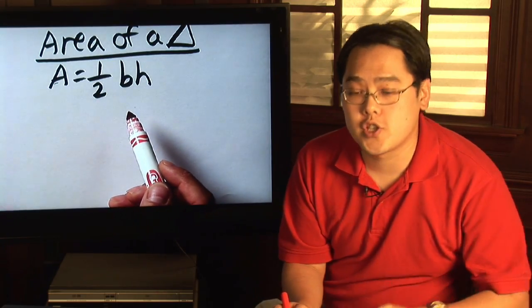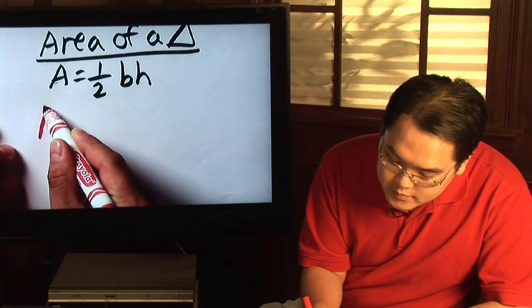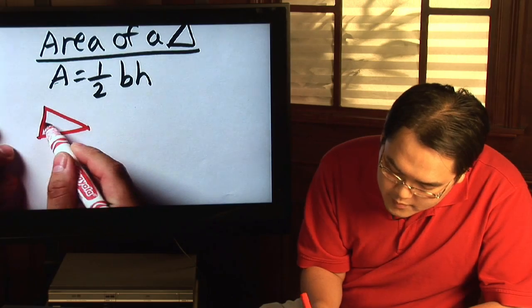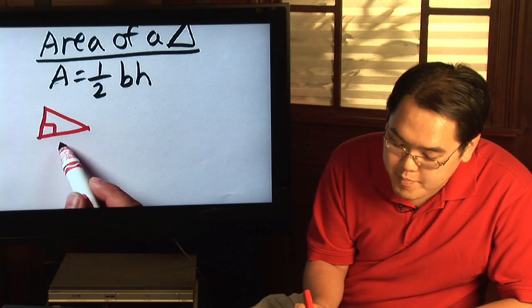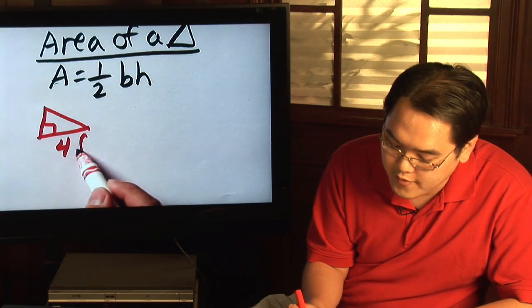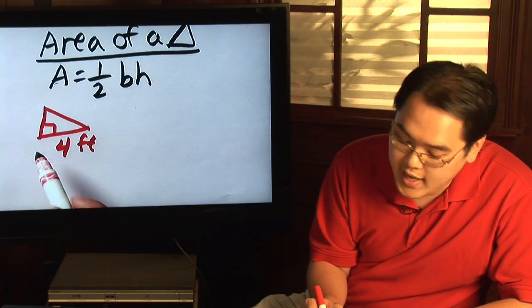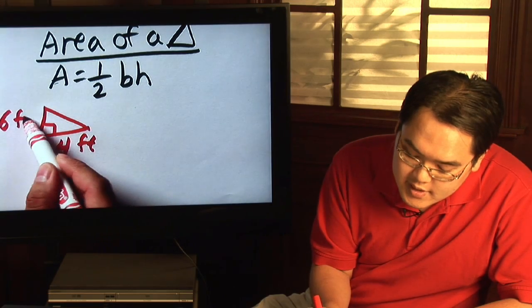Now if you have a triangle such as a right triangle, everything's going to be pretty straightforward because in a right triangle, the base, using four feet as an example, and the height, six feet as an example,